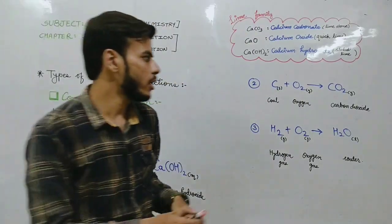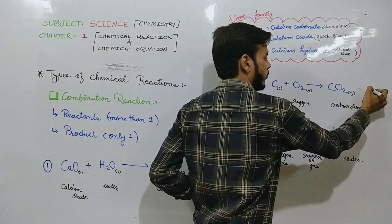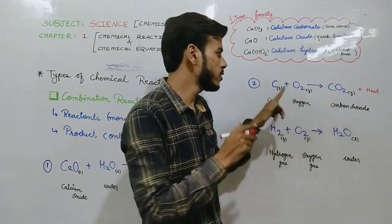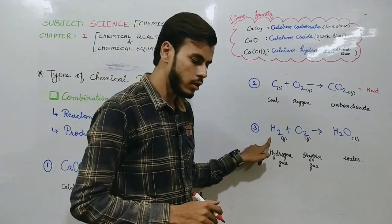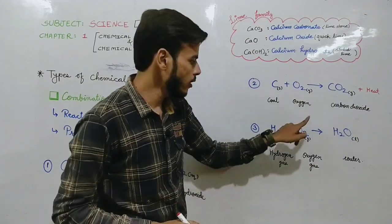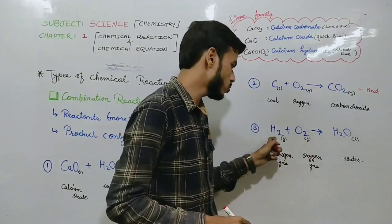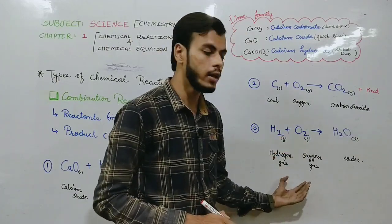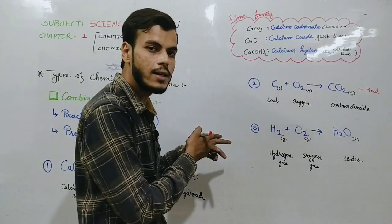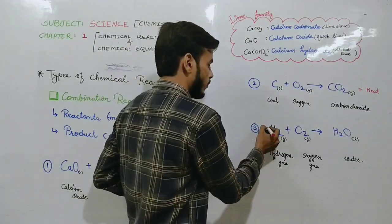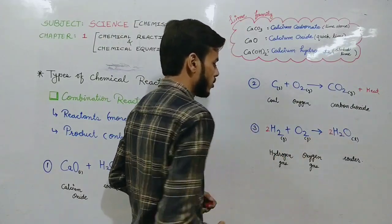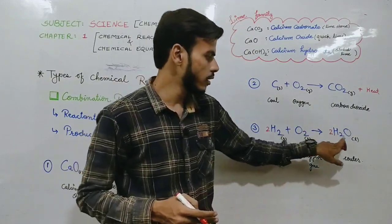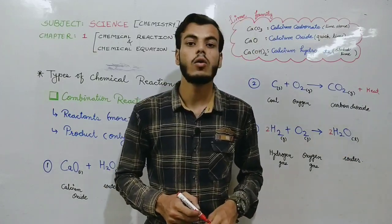If we want to denote heat, we can write plus heat on the product side. So heat is produced and product formed is just only one — so it is combination reaction. Second example: when hydrogen is reacted with oxygen gas, then water is formed. So here also more than one reactant and product just only one — it is also combination reaction. But this equation is not balanced, so let's balance it. H₂ gets coefficient 2, and O₂ also gets 2 — so 4 hydrogen reacted, 2 water formed, 2 oxygen on reactant side and 2 oxygen in product. So this is the combination reaction.